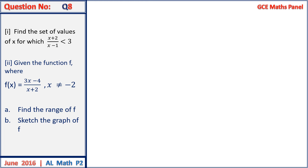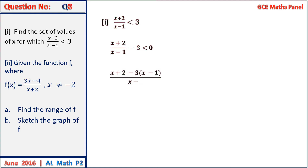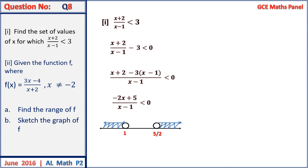Question 8: find the set of values of x for which x plus 2 on x minus 1 is strictly less than 3. Many students make mistakes with inequalities like this. Bring everything to the left-hand side: x plus 2 on x minus 1 minus 3 is less than 0. Finding the LCM and simplifying gives minus 2x plus 5, all on x minus 1, strictly less than 0. Testing on the number line, the regions satisfying this are above 5/2 and below 1, giving the solution as the interval from minus infinity to 1 union 5 on 2 to positive infinity.